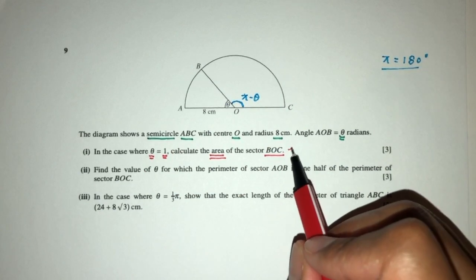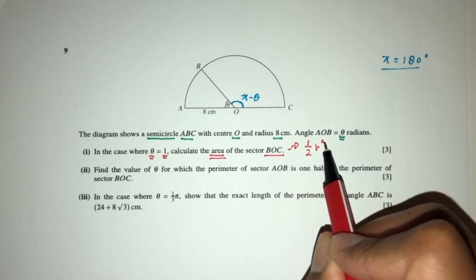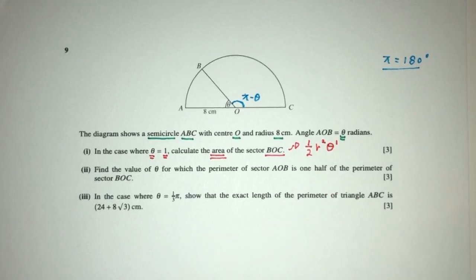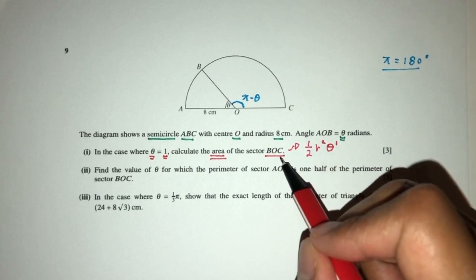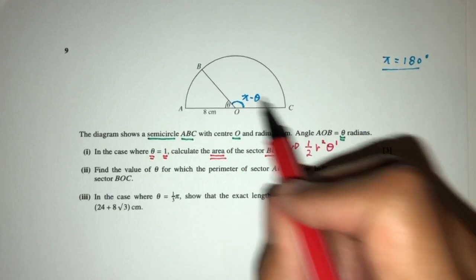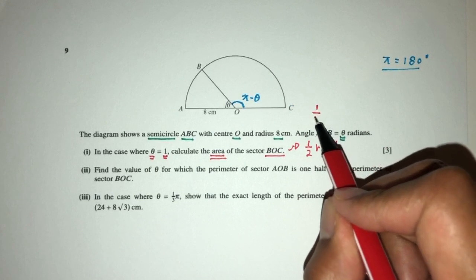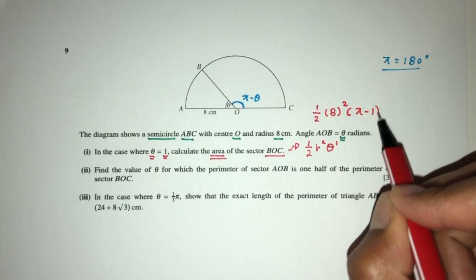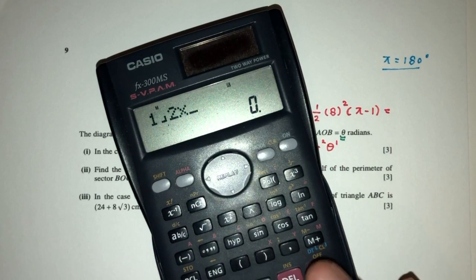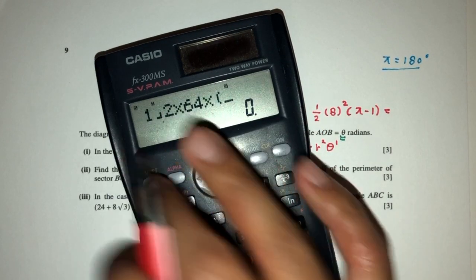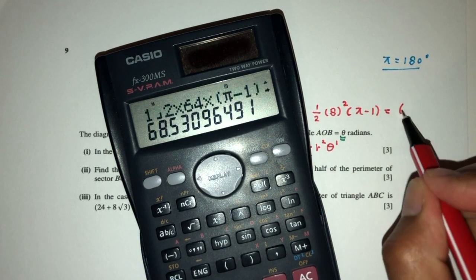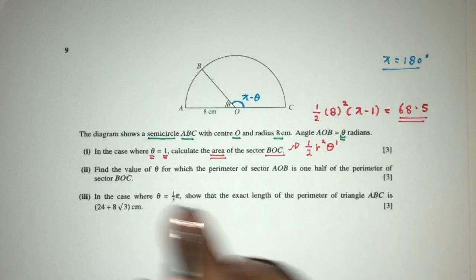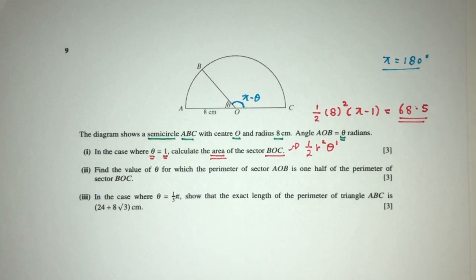We have to know the area of a sector is half r squared times the angle — let's call this theta prime. Now replace: because we know theta is 1, the angle will be pi minus 1, so the area will be half times 8 squared times (pi minus 1). That will be half times 64 times (pi minus 1), which gives 68.5 for the area of BOC.